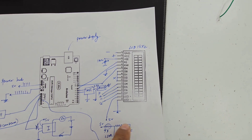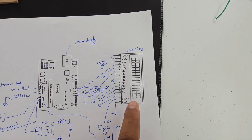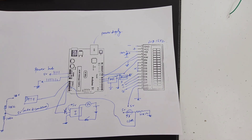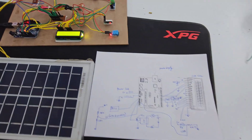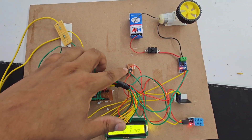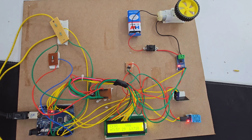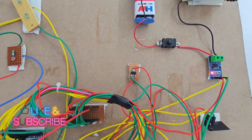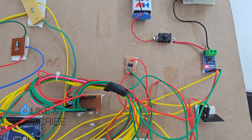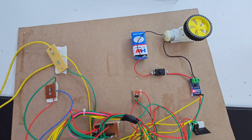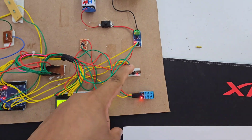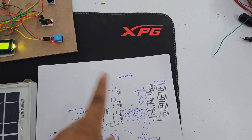We are connecting D4, D5, D6, D7 to Arduino pins 9, 10, 11, and 12. Then we have the plus and minus of the LCD connected for the backlight. We also have the AMS1117 IC, which is a voltage regulator providing a stable 3.3V to the Wi-Fi module.